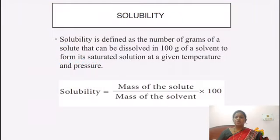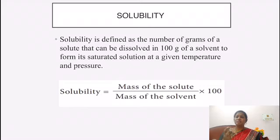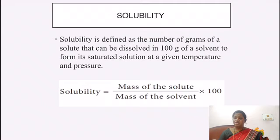Next, we are going to see solubility. Solubility is the definite number of grams of solute needed to dissolve in a particular amount of solvent at a particular temperature and pressure. Solubility can be found using the formula: mass of solute divided by mass of solvent, multiplied by 100.